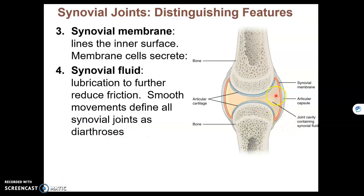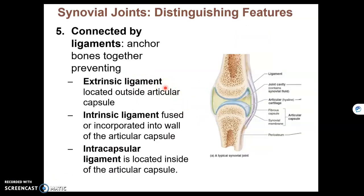All synovial joints have a synovial membrane, and this membrane contains cells that secrete synovial fluid into the space — synovial fluid being the fourth distinguishing feature. All synovial joints are also connected by ligaments. The ligaments can be outside the capsule, which are extrinsic; inside the capsule; or part of the capsule itself. Regardless of the type, ligaments connecting the two bones together is a distinguishing feature of synovial joints.